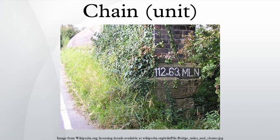An acre is nominally the area within a rectangle one chain by ten chains. The Queen's chain is a commonly used term in New Zealand for a strip of public land, usually 20 meters wide, that has been set aside for public use around much of the coast, around many lakes, and along all or part of many rivers. These strips exist in various forms but not as extensively and consistently as is often assumed.